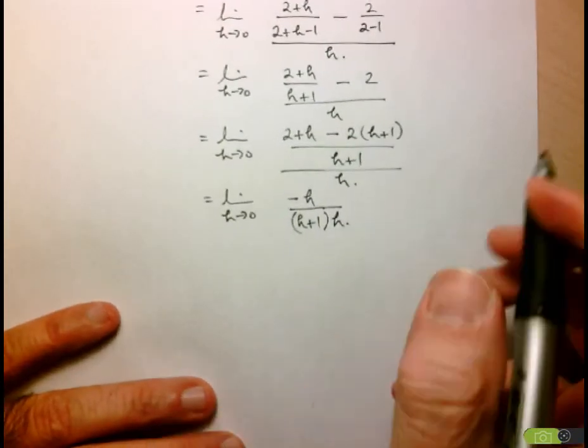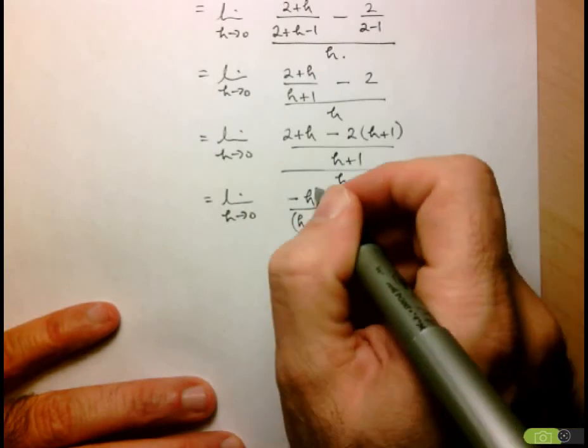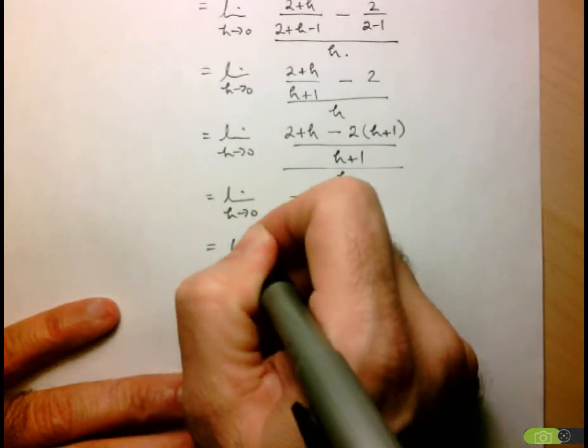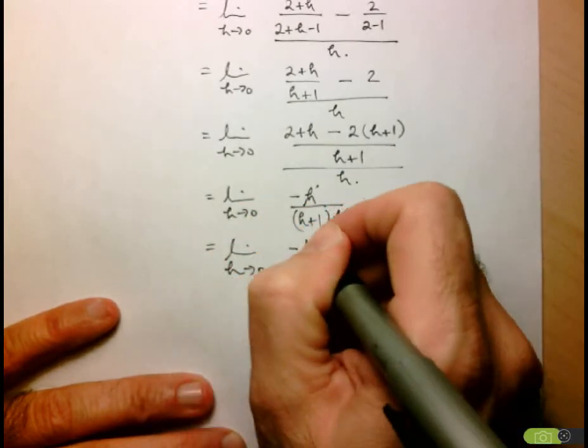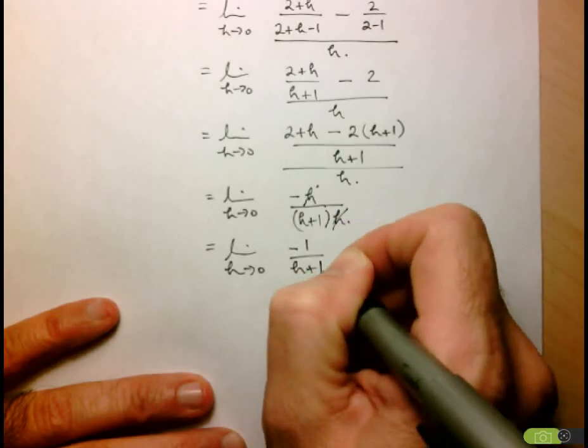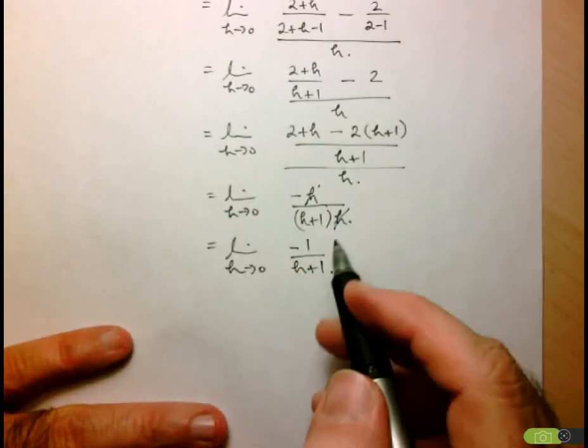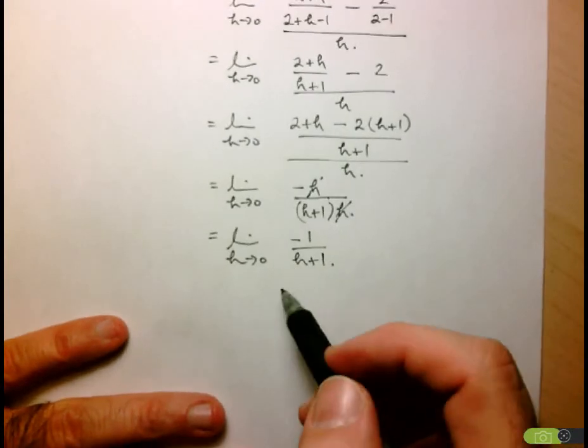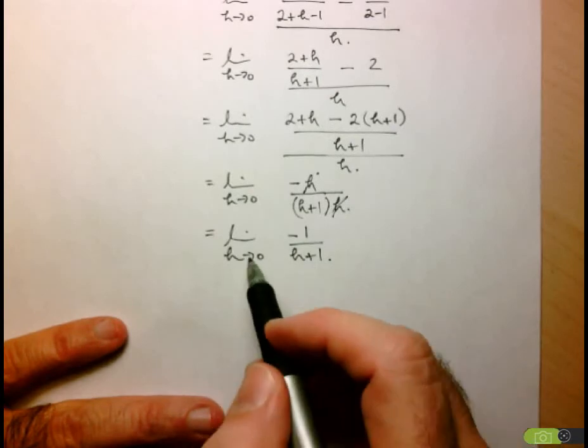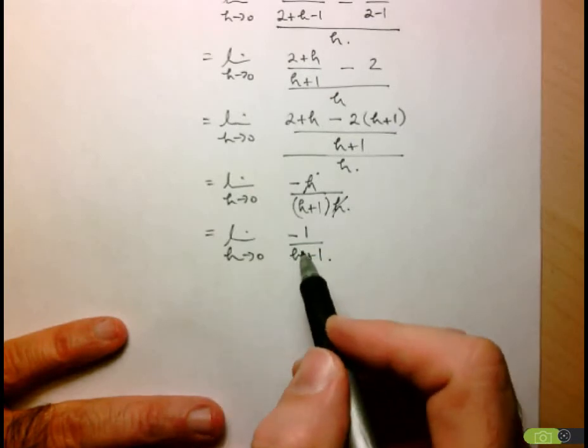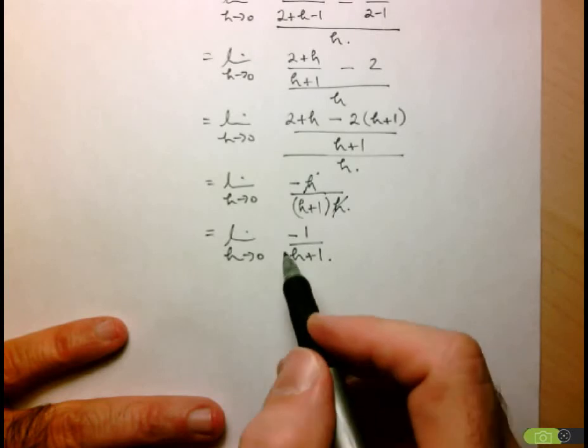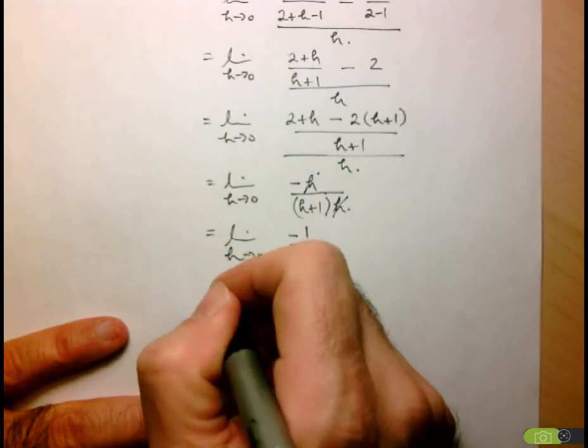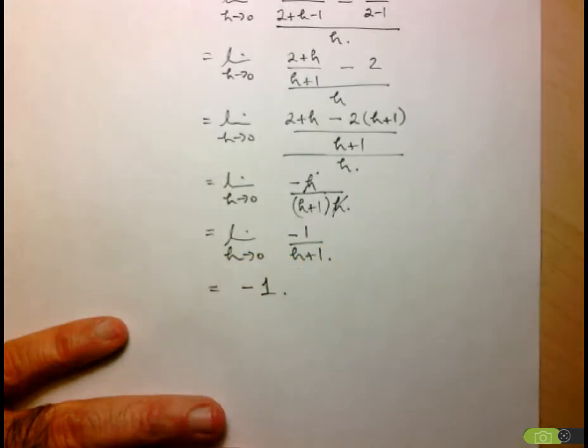This is where something very nice happens: this h reduces with that h in the numerator to give us 1. So what we're left with is the limit as h approaches 0 of negative 1 over h plus 1. We notice we no longer have that issue of a 0 in the denominator. As h approaches 0, h plus 1 just approaches 1, so the whole expression will approach negative 1 over 1, and that's the value of my limit.